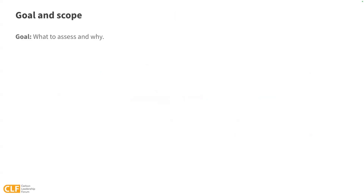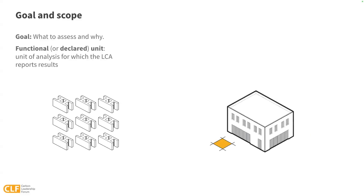The first step is goal and scope — figuring out what to assess and why. Maybe it's to assess the carbon tradeoffs between different structural and envelope options in your building, or maybe it's to support an environmental product declaration. Closely tied to the goal is defining the functional unit, or sometimes the declared unit — the unit of analysis for which the LCA reports results. This is key to being able to compare from one assessment to another. For example, the unit might be one cubic meter of concrete block or one square meter of office building in use for 75 years.